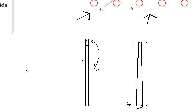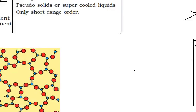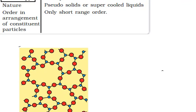Next property is order in arrangement of constituent particles. It has short range order. In this figure you can see their order range is very short, not lasting for a long distance.